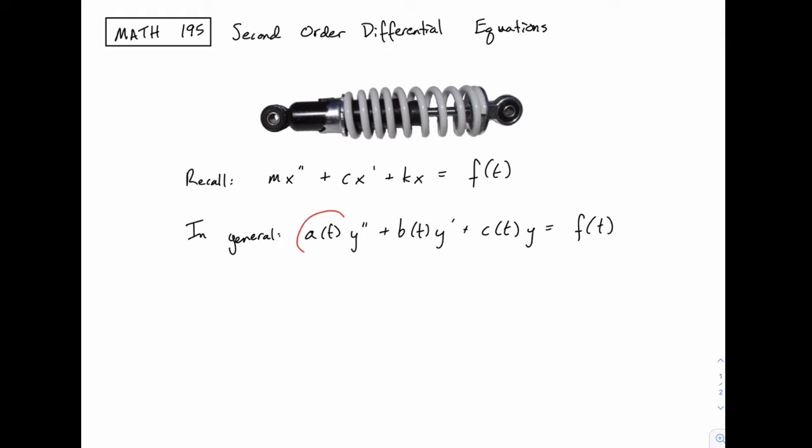We have a function that serves as a coefficient for the second derivative of Y, and then another one with Y prime, and another one with Y equals some other function of T. Here we're using T as our independent variable, and Y would be a function of T. So that's a general second-order linear differential equation, but we're actually going to make things even simpler.